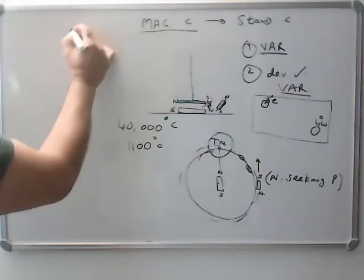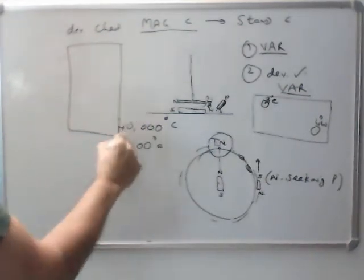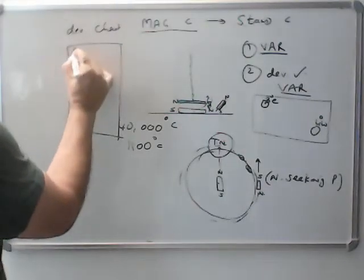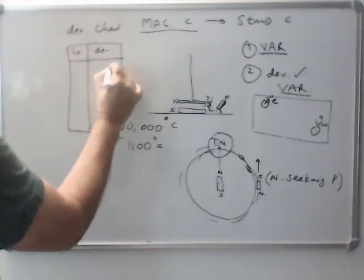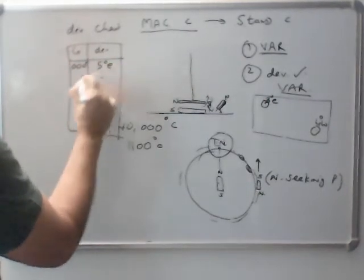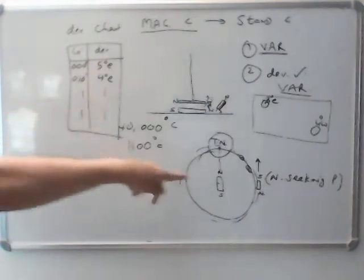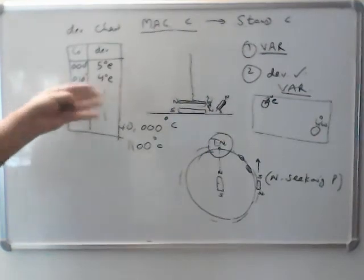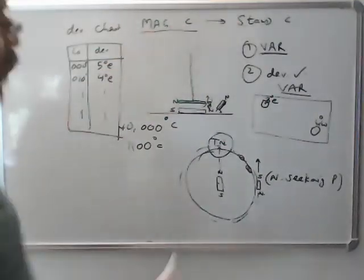And the value of deviation can be found from deviation chart. This is a chart prepared on the ship or by a shore compass adjuster. For various courses of the ship, the amount of deviation is written down. For example, at the course of 000, you might have 5 degrees east, then 010, you might have 4 degrees east, like that. So this has to be applied to whatever reading you get in the magnetic compass. And then once you apply these two errors to the magnetic compass, you get the direction of true north.